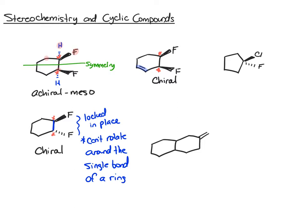In the next example, even though there's a ring coming off of this three-dimensional center, this side of the ring is identical to the other side of the ring — there's symmetry through that ring. Basically, that means there aren't four different groups around that carbon. That means this is not a chiral center, and if there are no chiral centers, it's simply an achiral molecule.